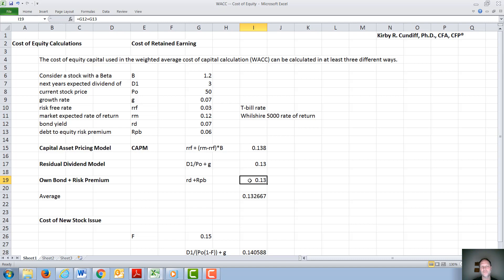If we average these three different methods of calculating the cost of retained earnings, we get around 13.3%.